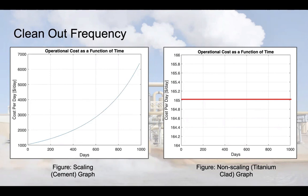As Chris just discussed, once we determined how the operational costs increase as time increased, it then became a question of when to initiate the $1.2 million cleanup. Our simulation showed us that the optimal amount of time between each cleanup is 500 days. Next, Marwa will be discussing the projected costs of a cement spool against a titanium-clad spool over a 30-year period.